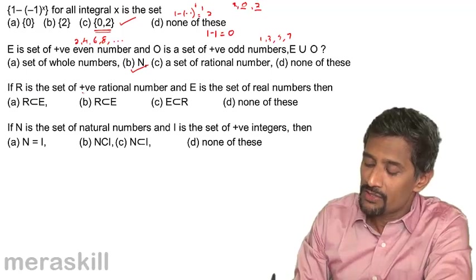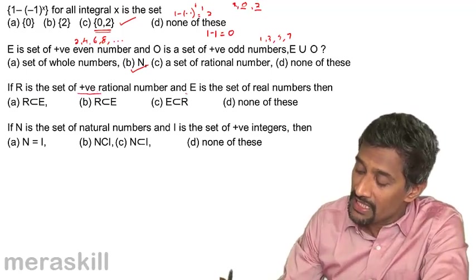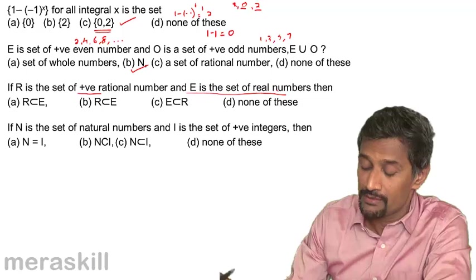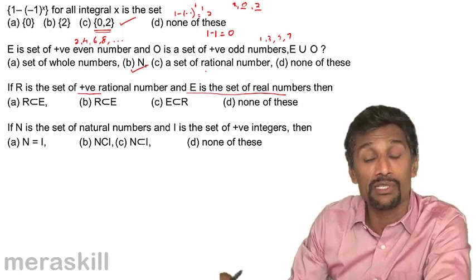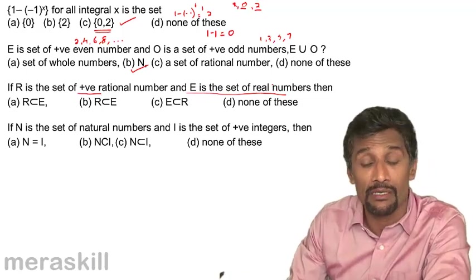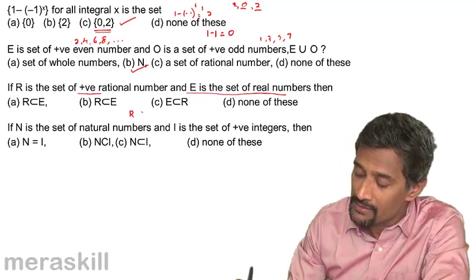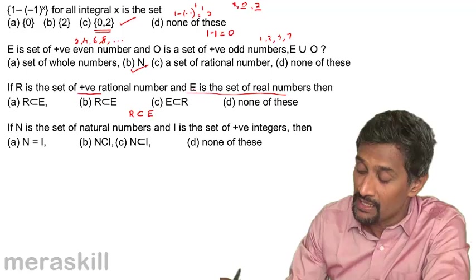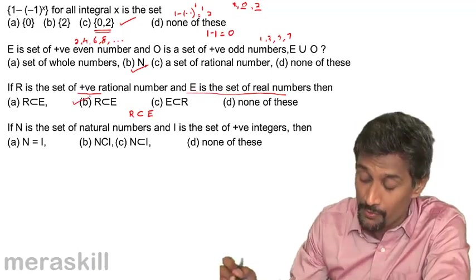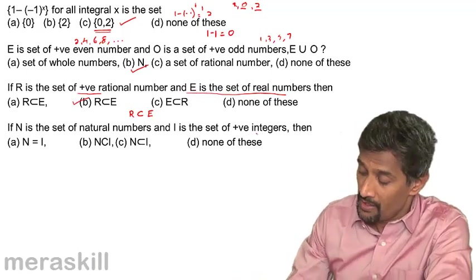R is a set of positive rational numbers and E is a set of real numbers. Then every rational number is a real number, but there are many real numbers which are not rational. So obviously R is a subset of E. E is a bigger set, so R is a proper subset of E.